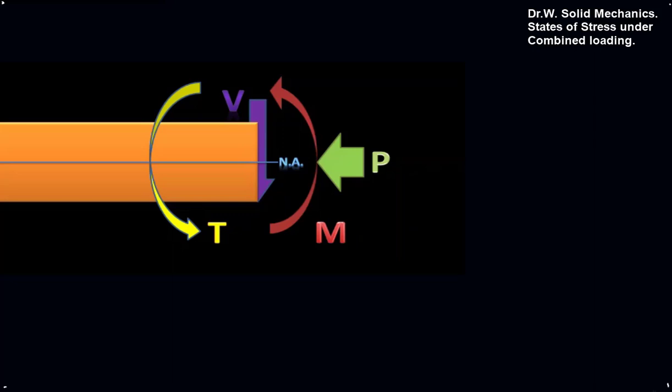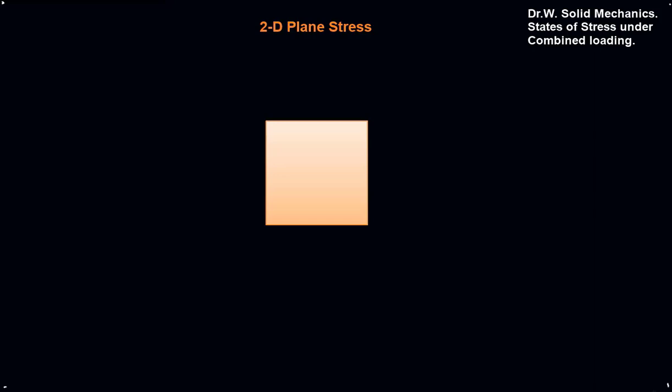Then we start to look at the effects inside the fibers of the beam. If we look at a small element at the top, it might be in compression. An element at the bottom might be in tension. And an element in the middle could have a combination of different types of stresses and shearing stresses. So it's common to take these small rectangular elements and analyze the forces that act on them.